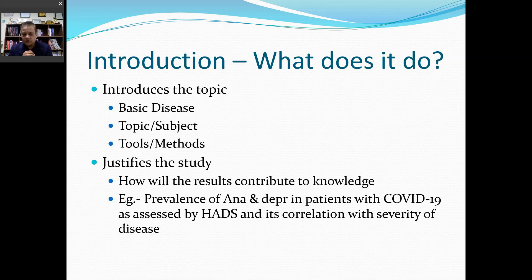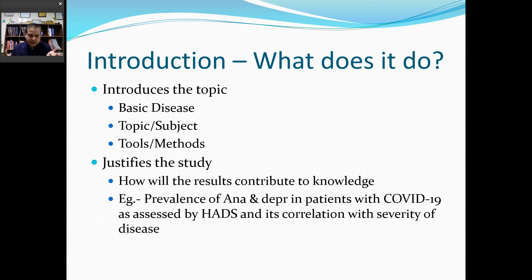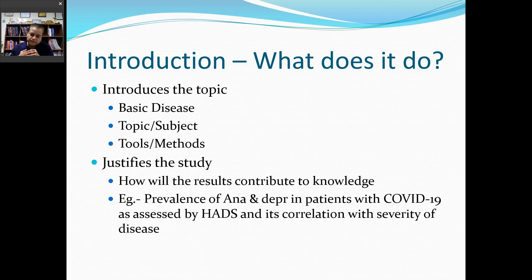By the end of the third paragraph, the reader knows everything about the basic disease, the subject, and the methods. Now the fourth paragraph will cover studies similar to your topic — for example, the prevalence of anxiety and depression in patients with COVID-19 has been seen to be 30 to 35%, with major predictors such as low oxygen saturation at admission, high ferritin levels, and high IL-6 levels, assessed using Hamilton scale or other tools.